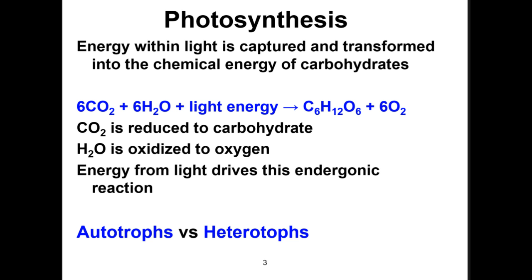Photosynthesis: energy within light is captured and transformed into the chemical energy of carbohydrates. The equation for photosynthesis is often written as six carbon dioxide molecules plus six water molecules, in the presence of light energy, will be converted to glucose and six oxygen. This equation illustrates that carbon dioxide is used to make the carbohydrate and water is broken down to release oxygen. The electrons and protons from the water are added to the carbon dioxide to generate the glucose. Energy from light drives this endergonic reaction.